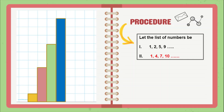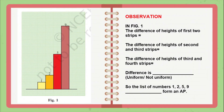Now let us write down our observations from these two figures. In figure one, the difference of heights of the first two strips — that is two minus one — is 1. The difference of heights of the second and third strip is five minus two, which is 3. The difference of heights of the third and fourth strip is nine minus five, which equals 4. So in all three cases the difference is not uniform; they are not the same.